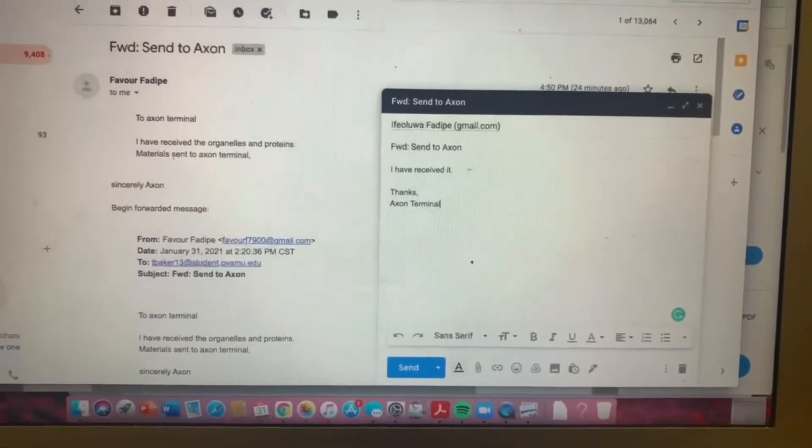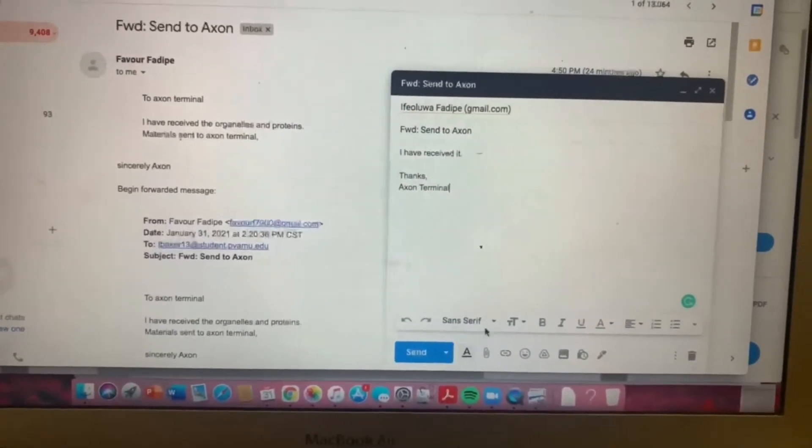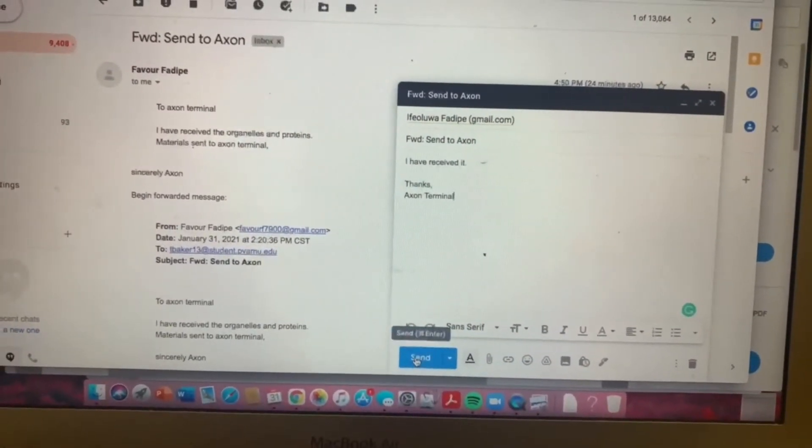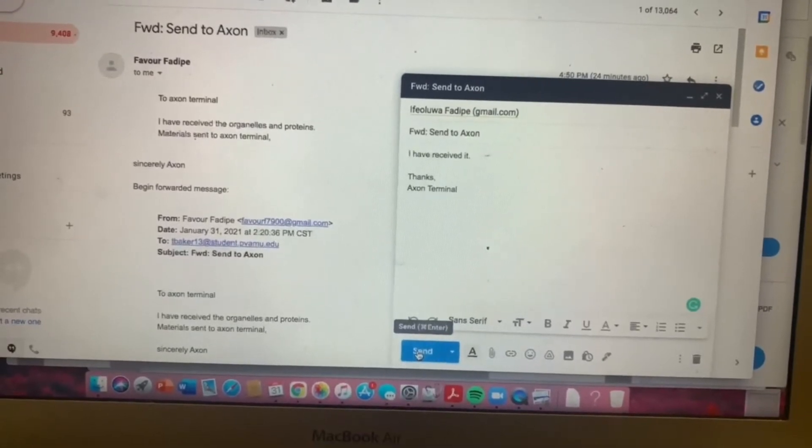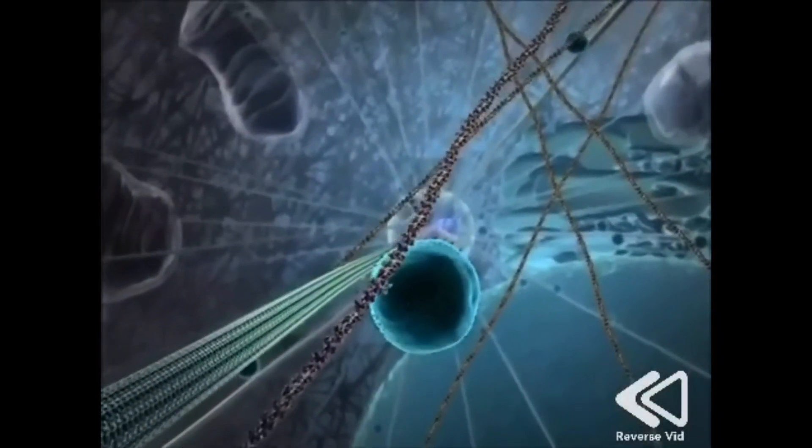Watch as the axon terminal sends a message back to the cell body. This initiates retrograde transport, which is when the axon sends information and materials to the cell body.